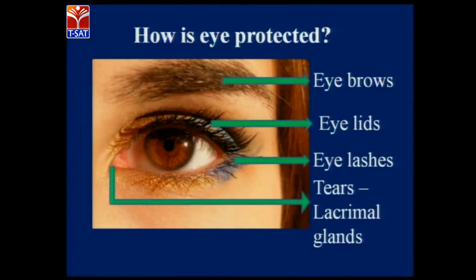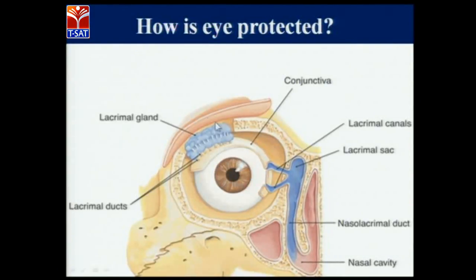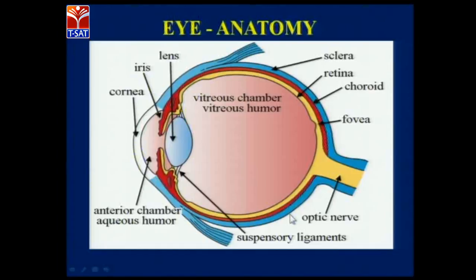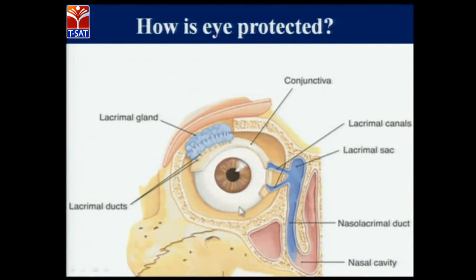The eyebrows, eyelids, eyelashes, and tears will protect the eye and will not allow dust particles to enter. If any dust particle enters the eye, the lacrimal glands will produce tears. The lacrimal gland is shown here in blue, and the lacrimal ducts will release tears that bathe the upper surface of the eye and come out through this portion. Children, you may have seen that while we cry, our nose discharge also starts. This is because the tears travel through lacrimal canals, enter into the lacrimal sac, and from the lacrimal sac through the nasolacrimal duct they enter into the nasal cavity. That is why, along with tears, nasal discharge takes place.